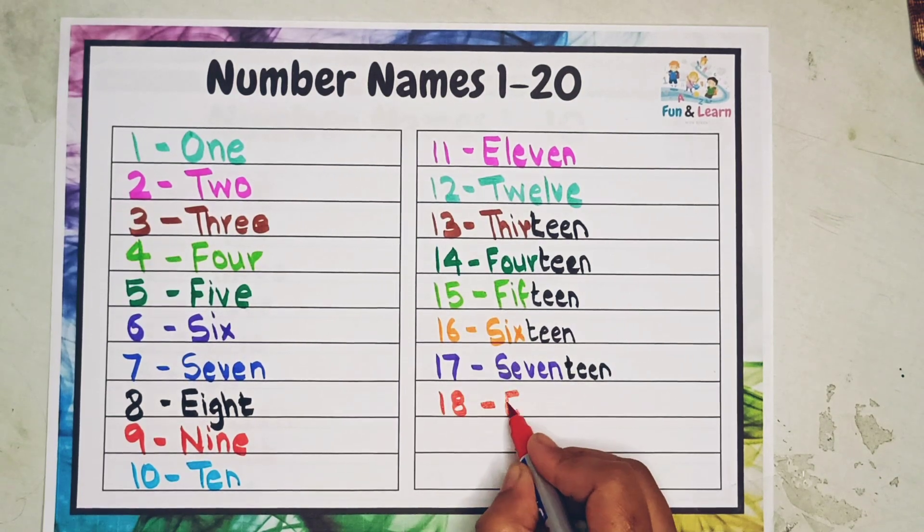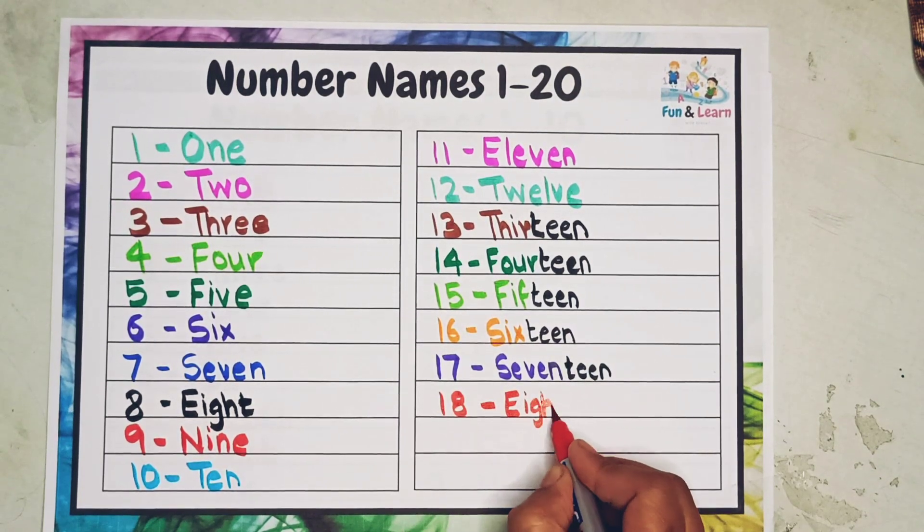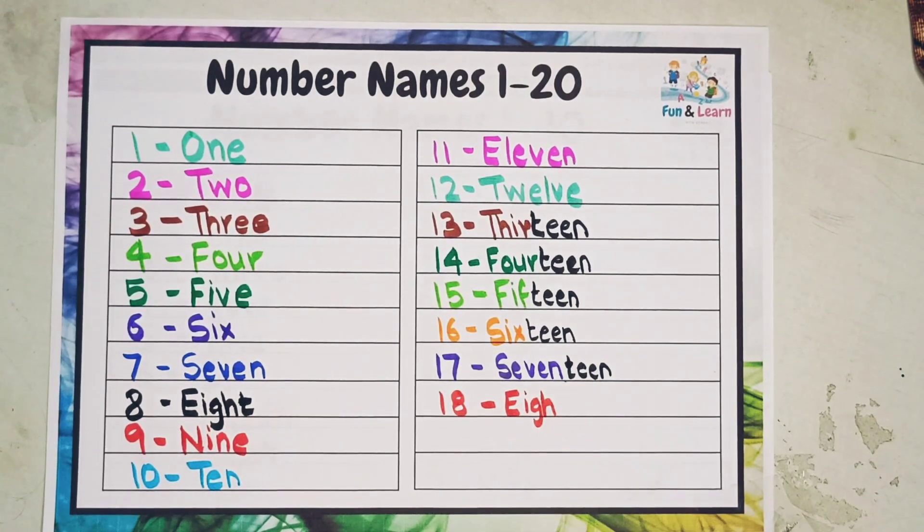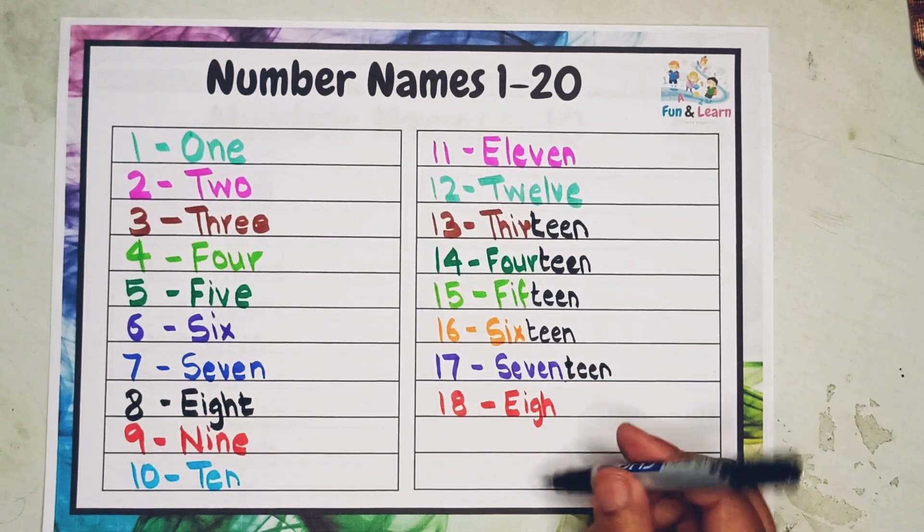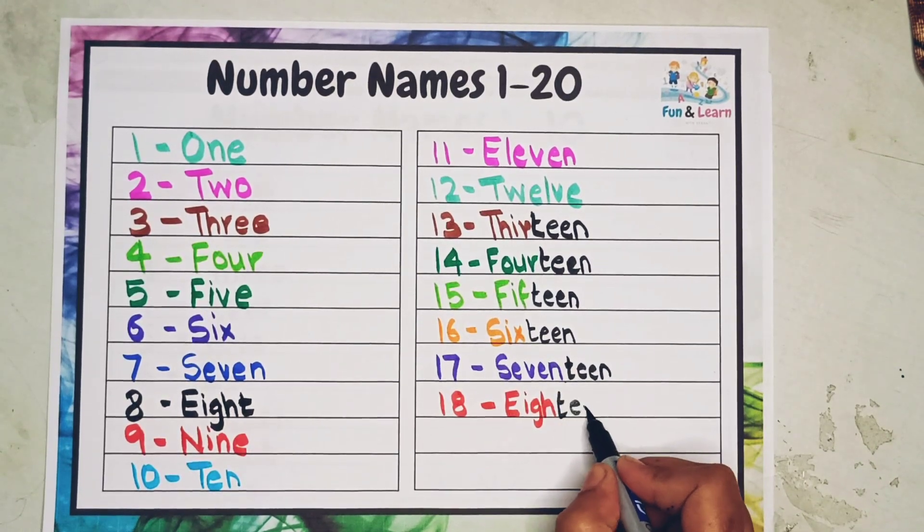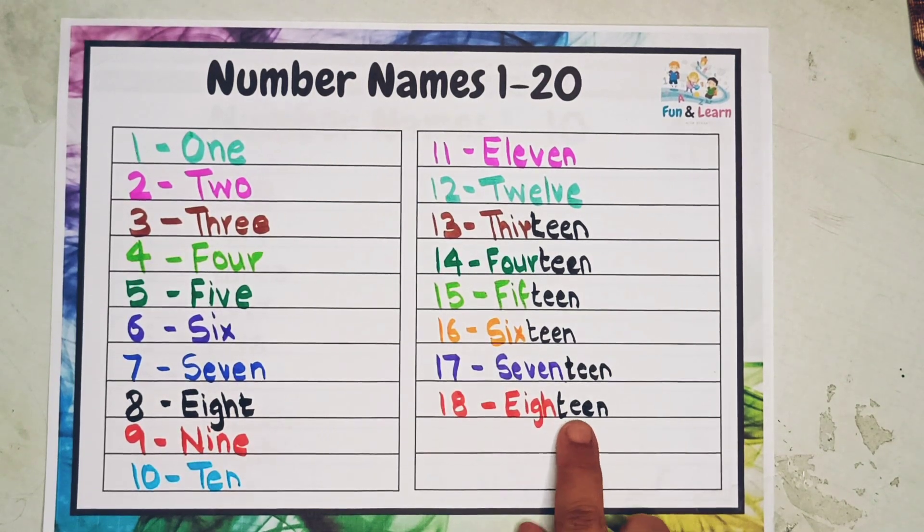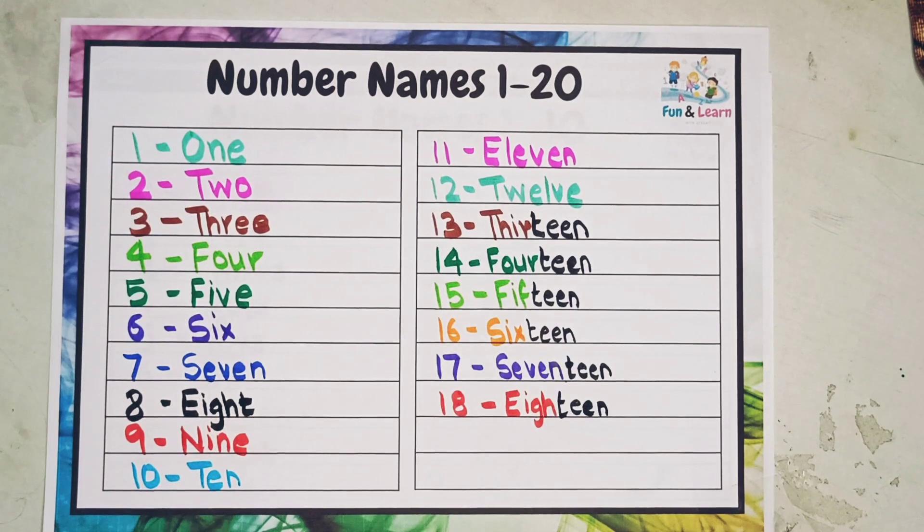18: E-I-G-H-T-E-E-N, eighteen. See, now you will not repeat T twice, okay? E-I-G-H-T-E-E-N. So it's eighteen—it's not two T's, okay? It's only one T.